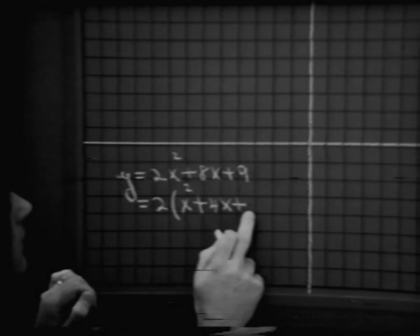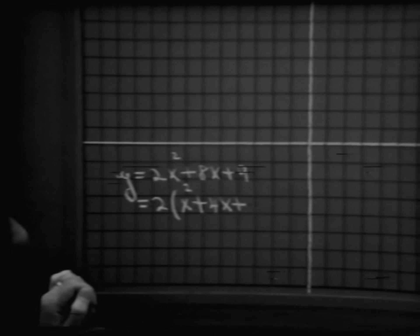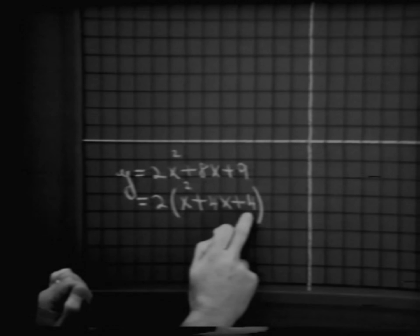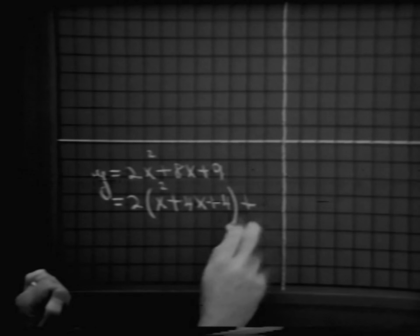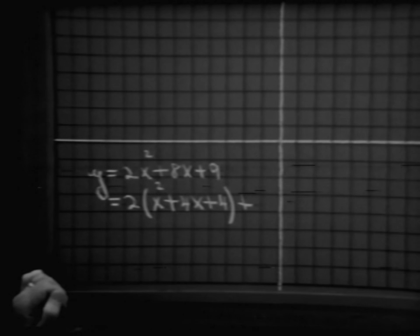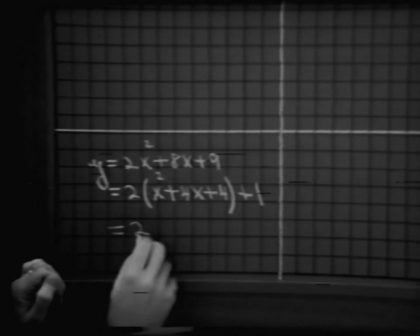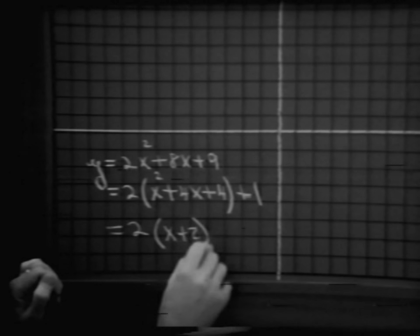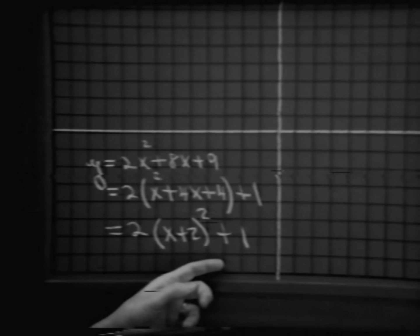Now let's complete the square right here. What number would we like to add in order to make this a perfect square? Plus 4. Now, we're really not adding 4 here because we really have 2 times 4, which is 8. And we started out with 9. So what number do we want to add here in order to get this sentence equivalent to the first sentence? Simply the number 1. Now, looking at this pattern, there are 2 times, and let's write this as a perfect square — x plus 2 squared — plus 1. And here then is our pattern in which we can easily make this graph.